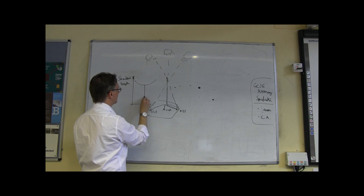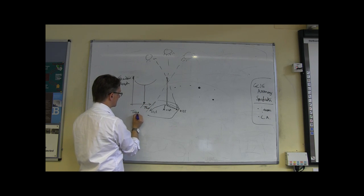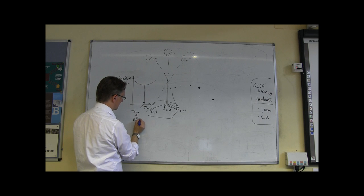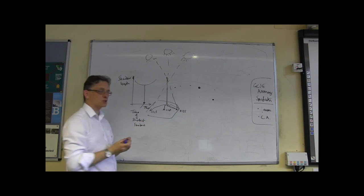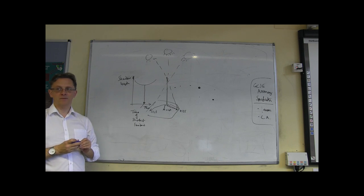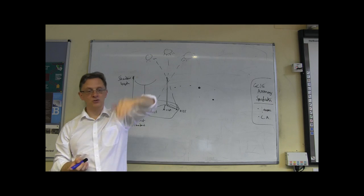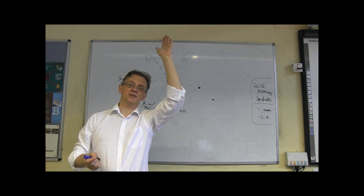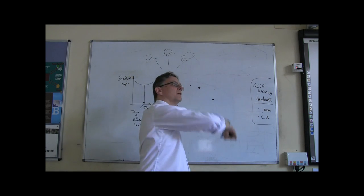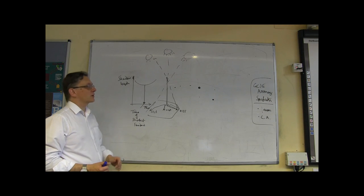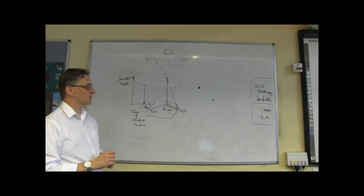This point here is the interesting one, because at this particular time — this is the time of shortest shadow. It's the time at which the sun has reached its highest point. We get the shortest shadows, and after that the sun starts to drop into the west, and the shadows start to get longer again.